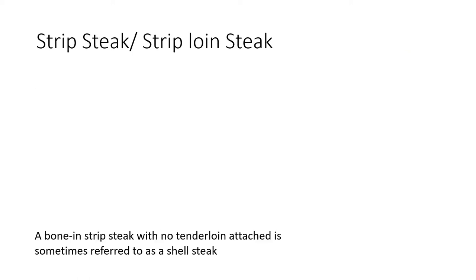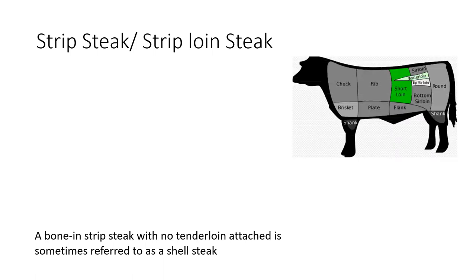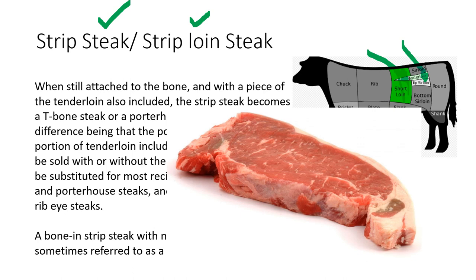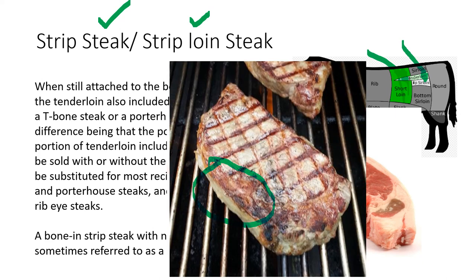Strip steak or strip loin steak: a bone-in strip steak with no tenderloin attached is sometimes called a shell steak or strip loin steak. It comes from the short loin after the tenderloin is removed. When sliced across, the resulting cut is the strip loin steak, which does not have the tenderloin piece attached.